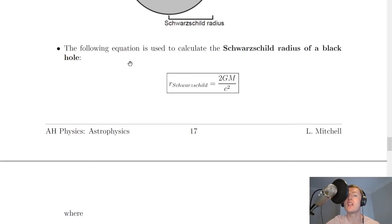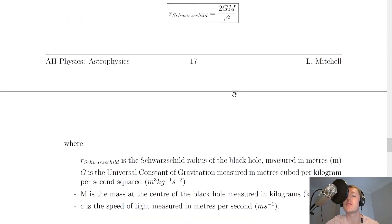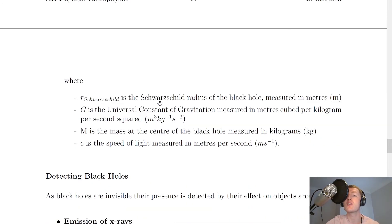So we use this equation here. The following equation is used to calculate the Schwarzschild radius of a black hole, where R Schwarzschild is equal to 2GM divided by c squared. So what do these symbols mean? R Schwarzschild is the Schwarzschild radius of the black hole measured in metres. G is the universal constant of gravitation measured in metres cubed per kilogram per second squared. Capital M is the mass at the centre of the black hole measured in kilograms. And c is the speed of light measured in metres per second.